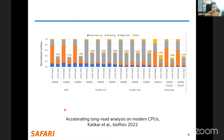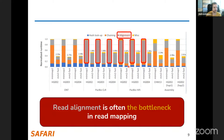It turns out that the read alignment part is really the major issue in this pipeline. A recent paper benchmarking the state-of-the-art read mapper minimap2 observed that in many cases, read alignment is the real bottleneck — the vast majority of execution time is occupied by alignment.